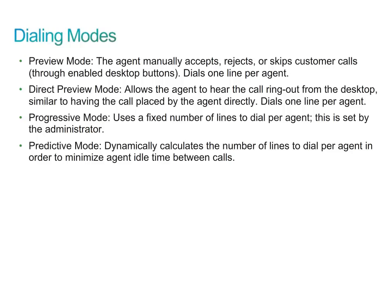In the progressive and predictive modes, multiple outbound calls are made for each reserved agent. When calls are answered, call progress analysis determines if a human has answered, which can then be passed to an agent. The goal is to have one human answer per agent, assuming other calls will not be answered or will reach voicemail. If an answering machine, voicemail, or too many humans answer, the call can be handled by sending the contact to an IVR. The main difference between progressive and predictive dialing modes is the method of choosing how many lines per agent to dial.